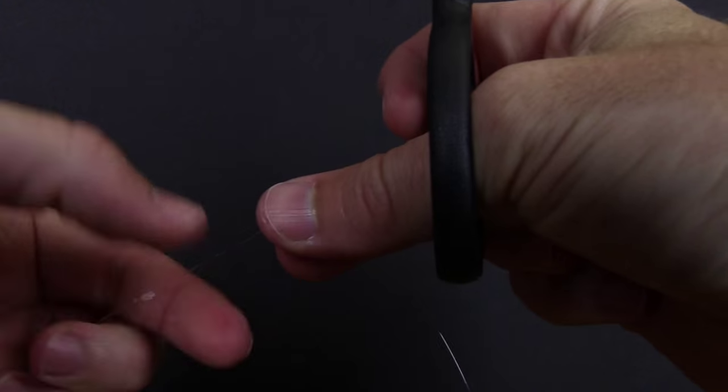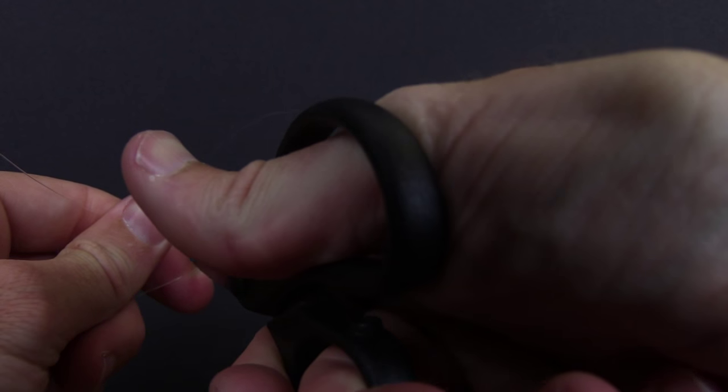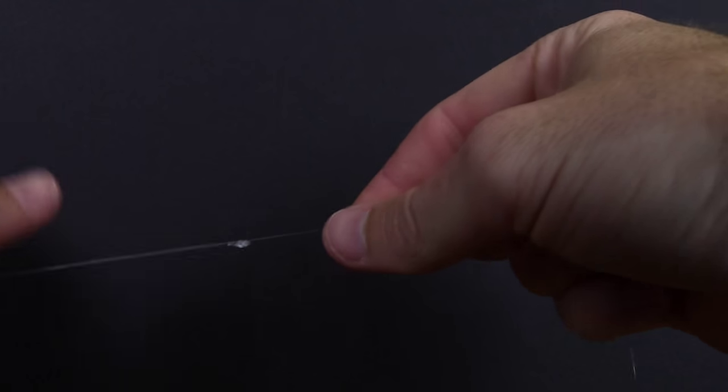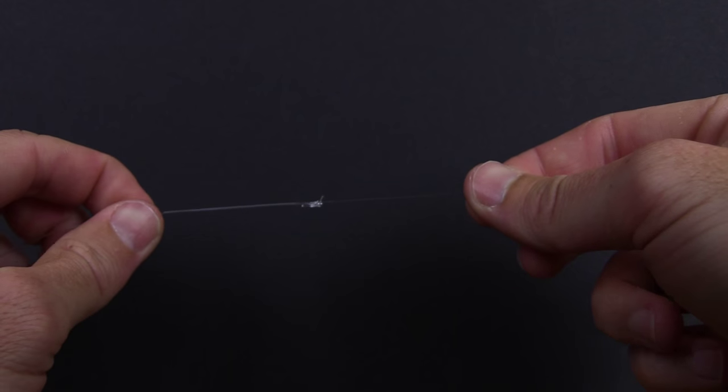You can cut those tag ends real nice and snug. There we are, this is the Albright special. Good knot, you can see it's easy to tie.